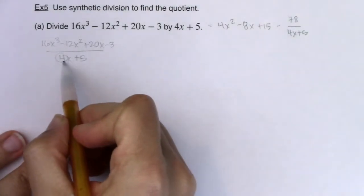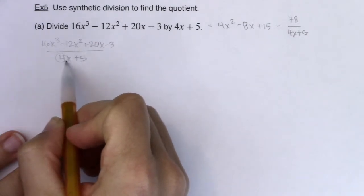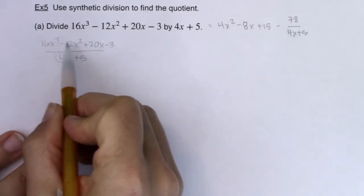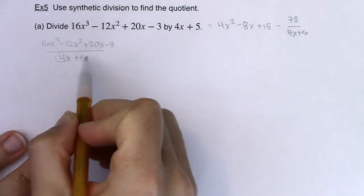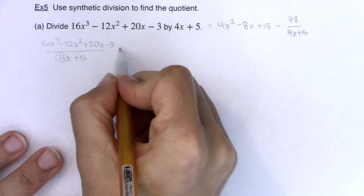So if I want to get this coefficient to be 1, I need to divide this term by 4. And you can't just divide one term by 4, because you would change your original problem. So I need to divide every single term in here by 4, and it will introduce fractions.